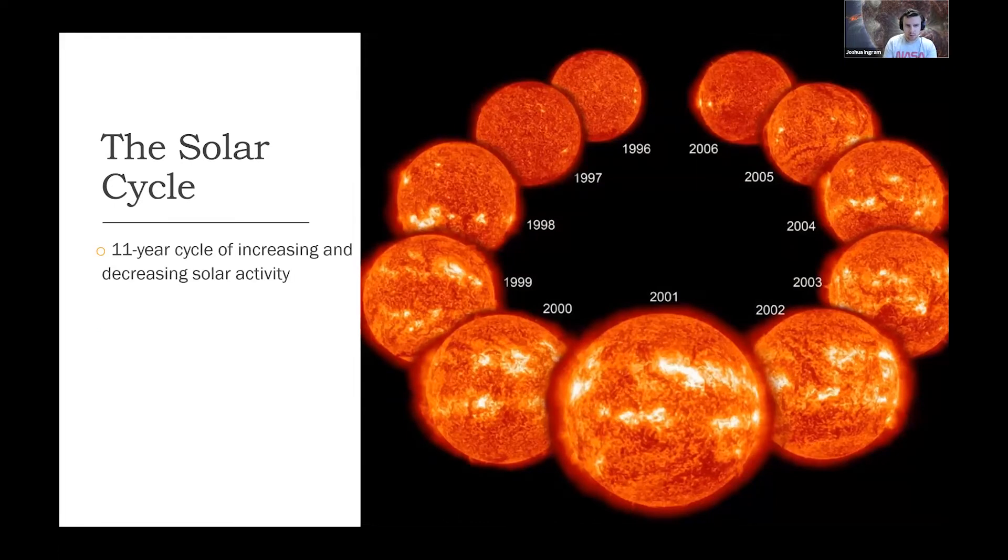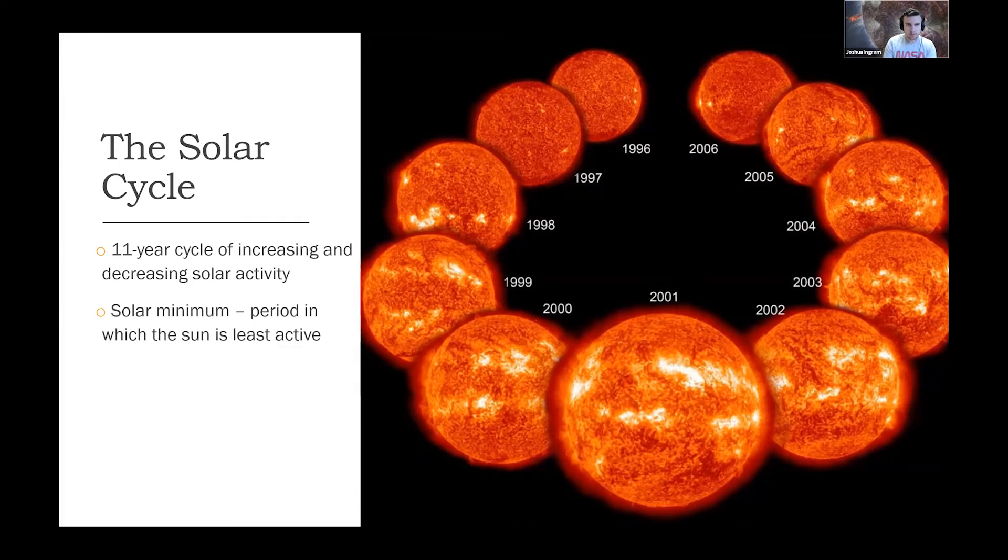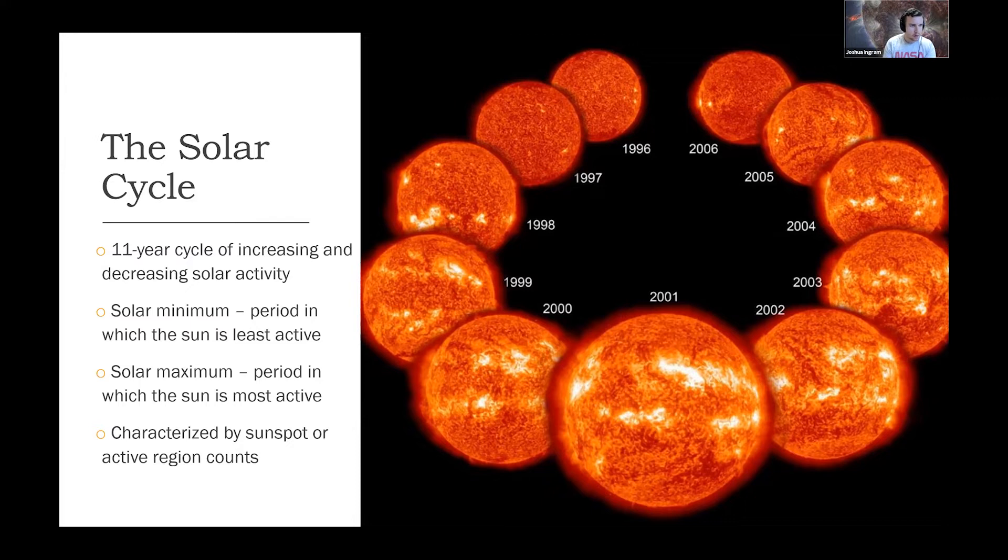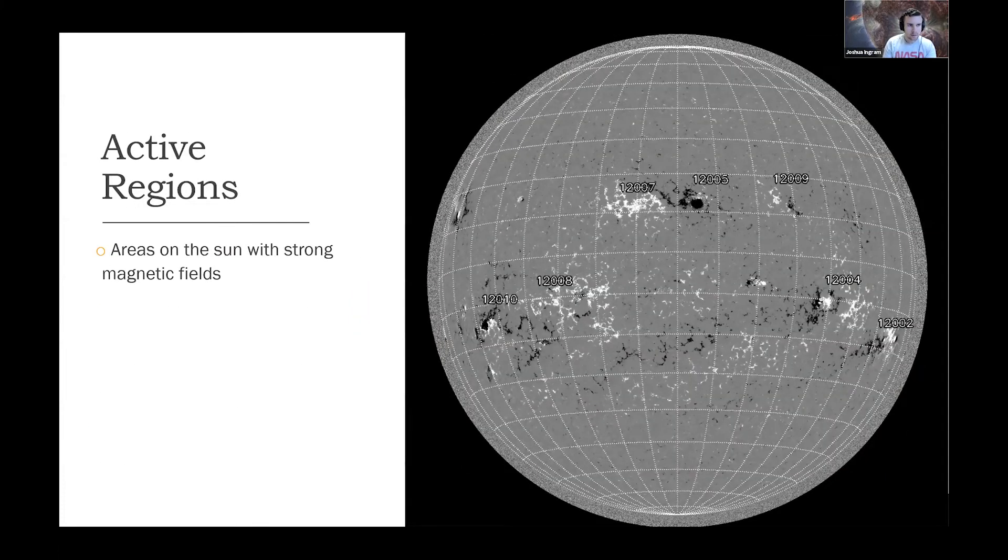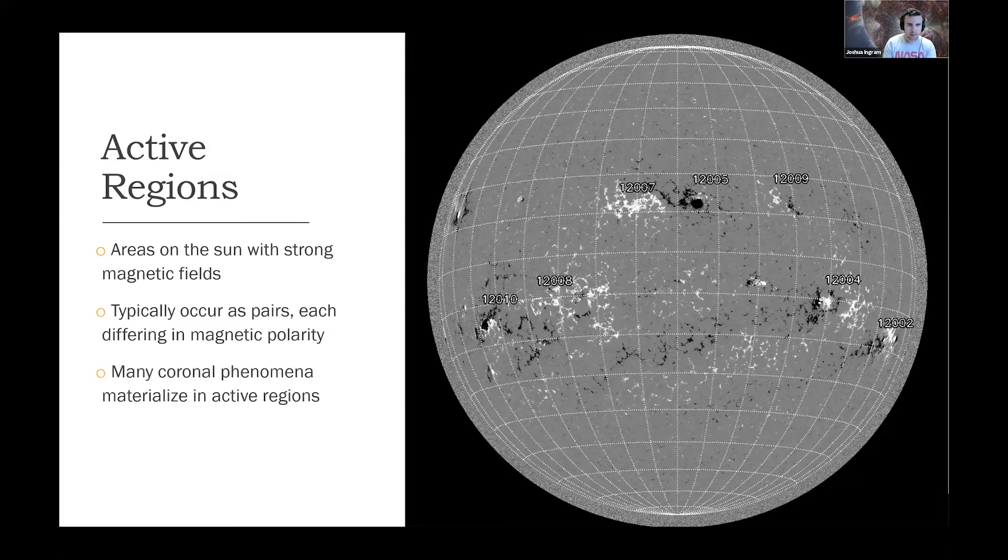We need to talk about the solar cycle. It's an 11 year cycle of increasing and decreasing solar activity. There are two main phases. One is called the solar minimum. You can see what the sun looks like near solar minimum in this image near 1996 and 2006. It doesn't look like there's a lot going on. Then there's the solar maximum, which you can see around 2001, 2002. There are all these bright spots. The sun looks very active. We characterize the solar cycle by sunspot counts and active region counts. Active regions are those bright areas you could see in those images. These are areas on the sun with strong magnetic fields. They occur in pairs. This image was taken with a magnetogram, which visualizes magnetic field energy. You can see these black and white spots on the sun, and those correspond to active regions.